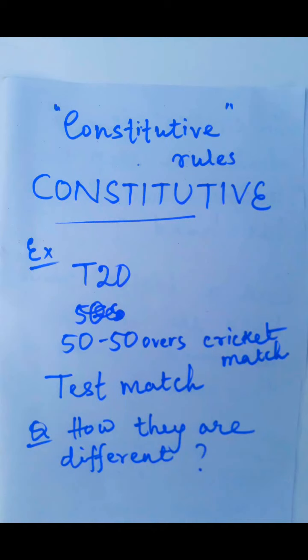In our first example, you know there are three different formats or types of cricket. The first one is T20, the second one is 50 overs one day international, and the third is a test match. My question is: how are they different? How is each game of T20, 50 overs, or test match different from the other one?